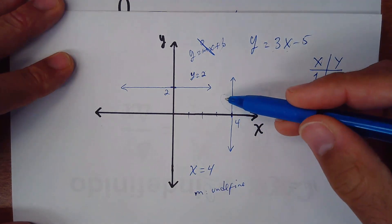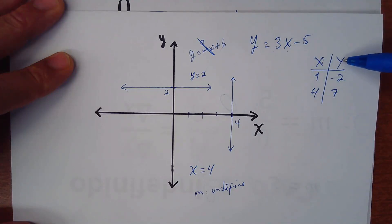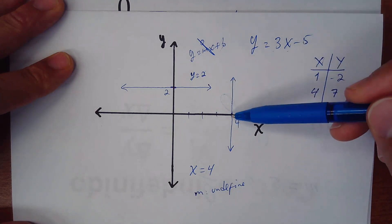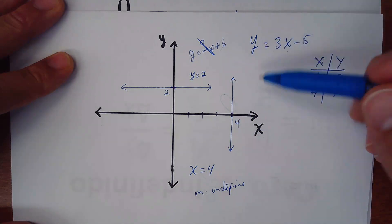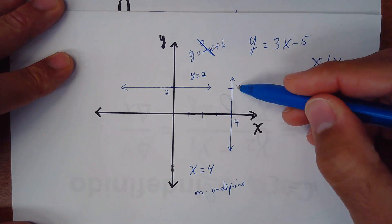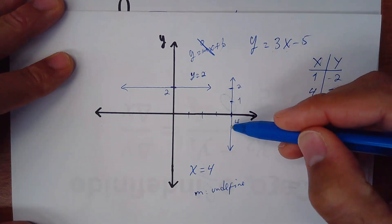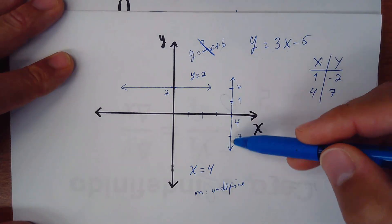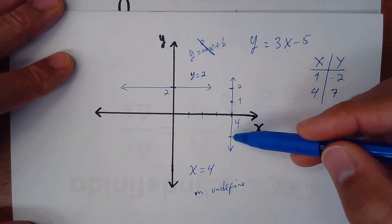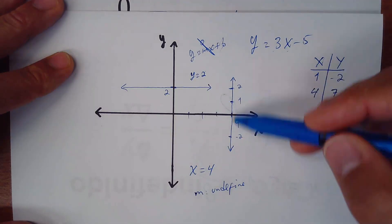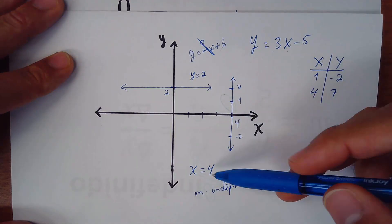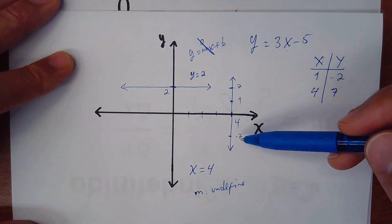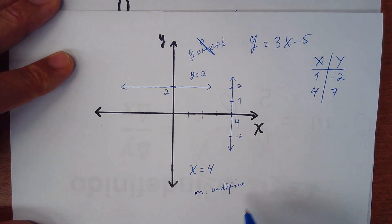Because if we take a look at the dependent variable, which is the y, I don't know what is the value of y. Because y could be any value. Here y is 2. Here y is 1. Here y is negative 2, and so on. So we don't know exactly what is the value of y in this equation, x equal 4. Because we don't know what it is, it's not defined. That's what we call it, undefined, to the slope.